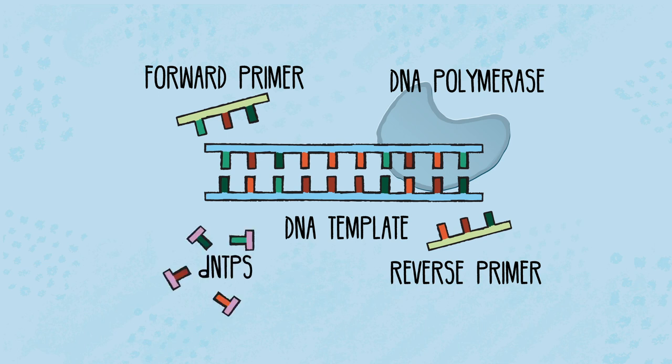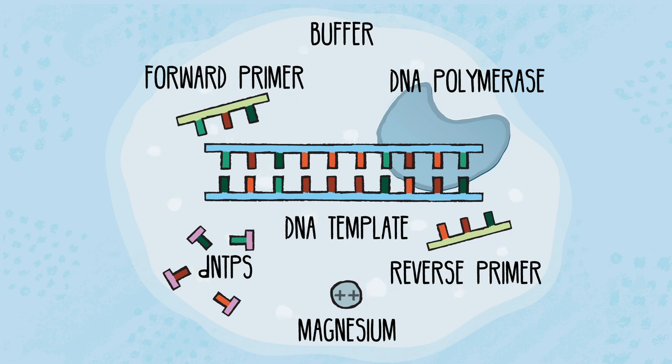Nucleotides, also called dNTPs, are used to make the new strands. A reaction buffer provides a stable pH and contains magnesium chloride.